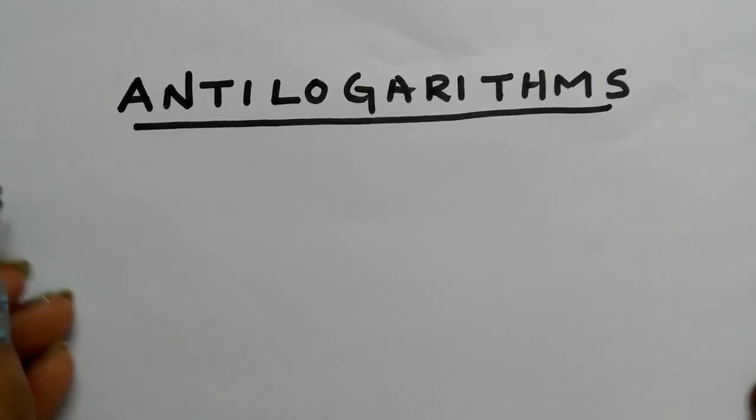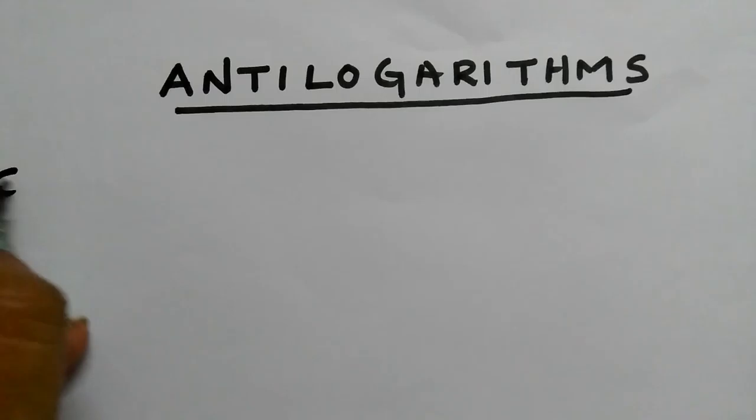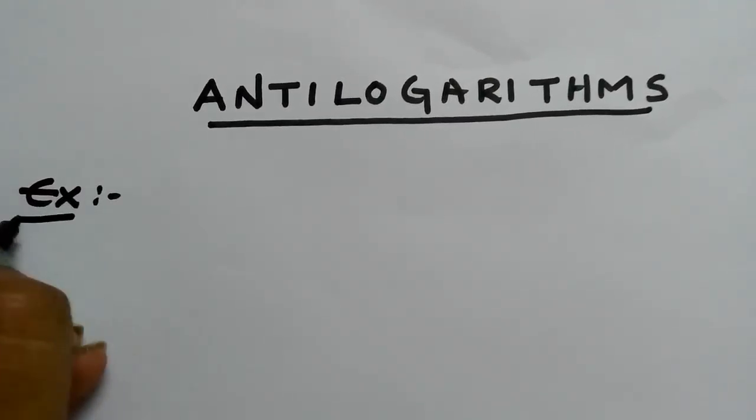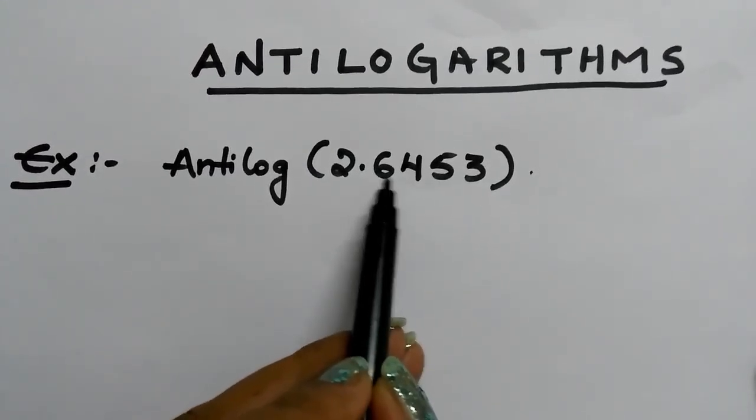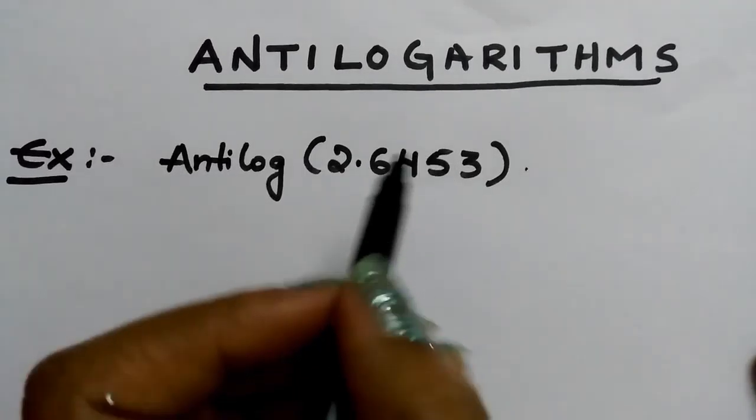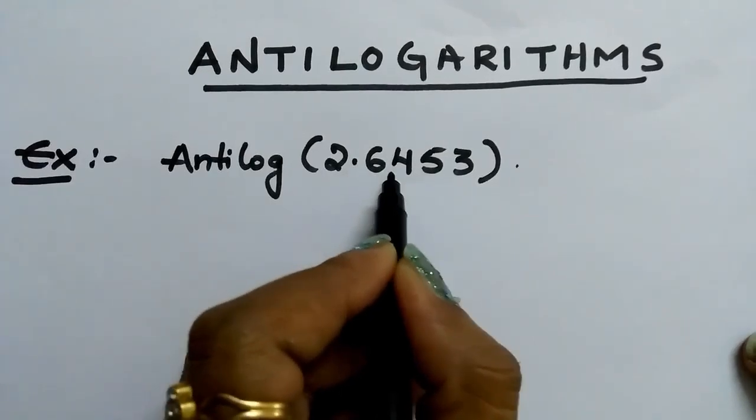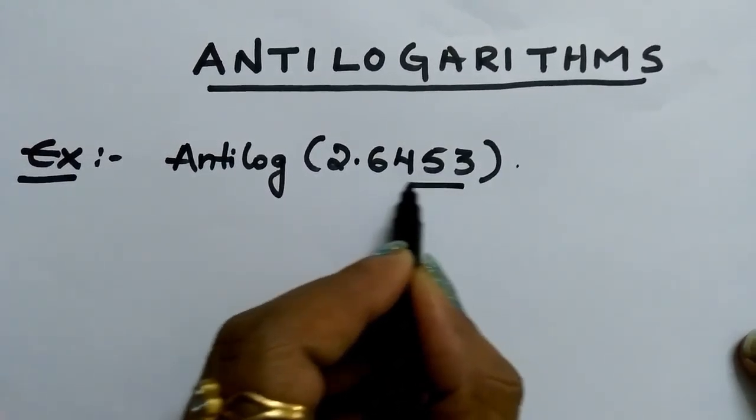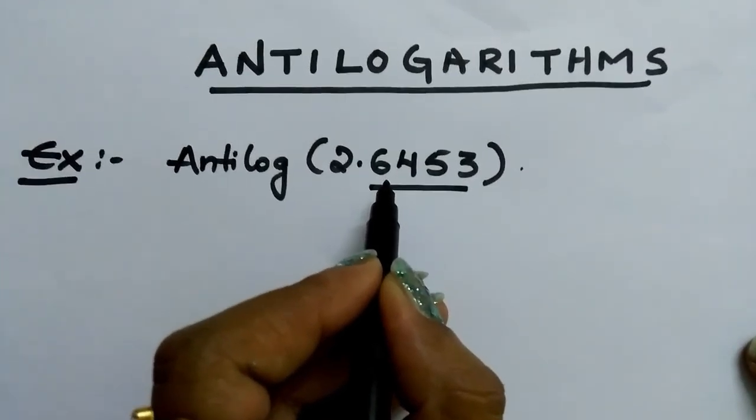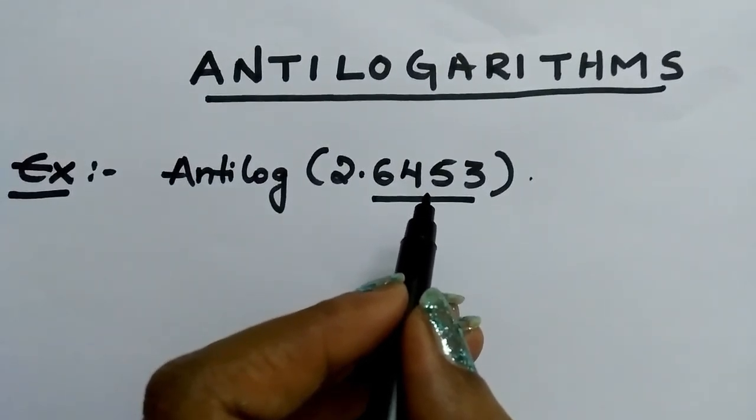See this example: Antilog of 2.6453. After the point, this 6453, we call it mantissa. This fractional number is called the mantissa.